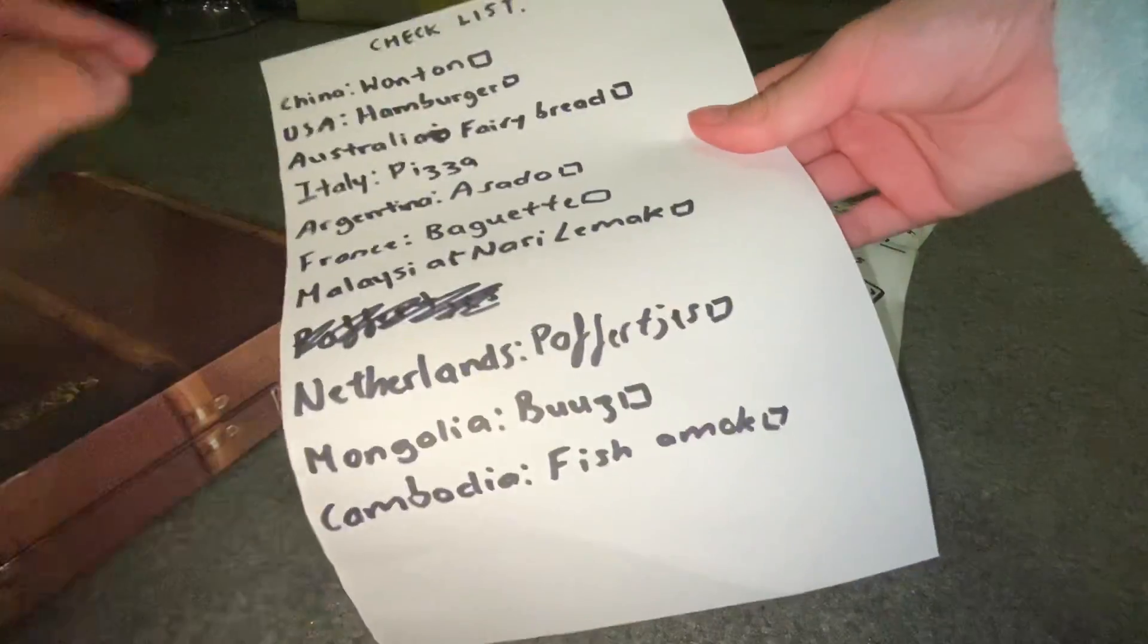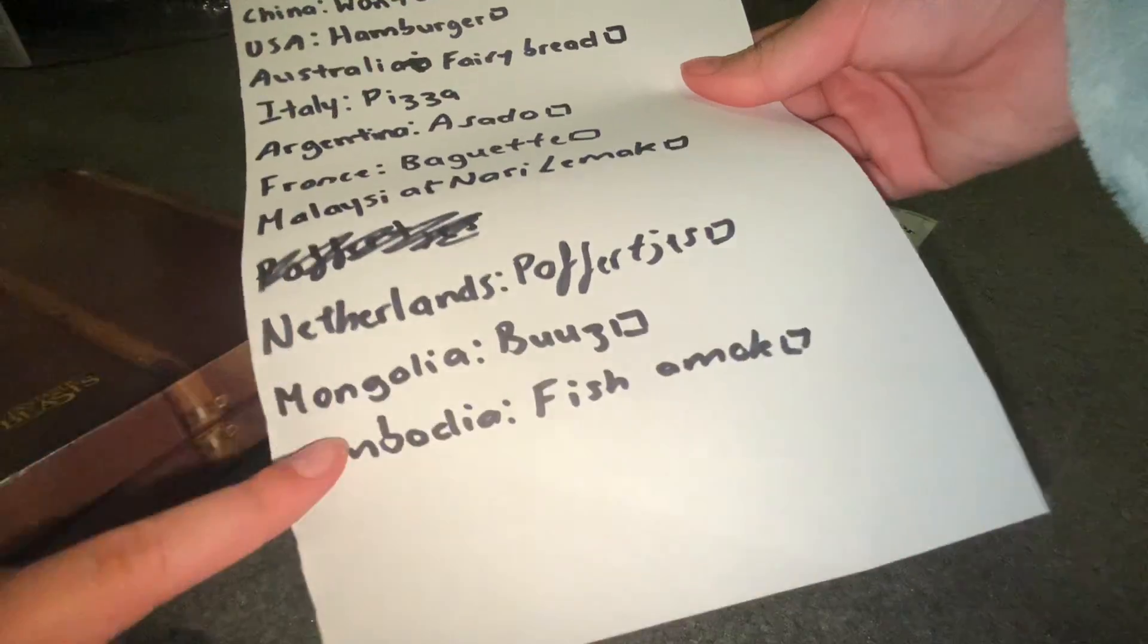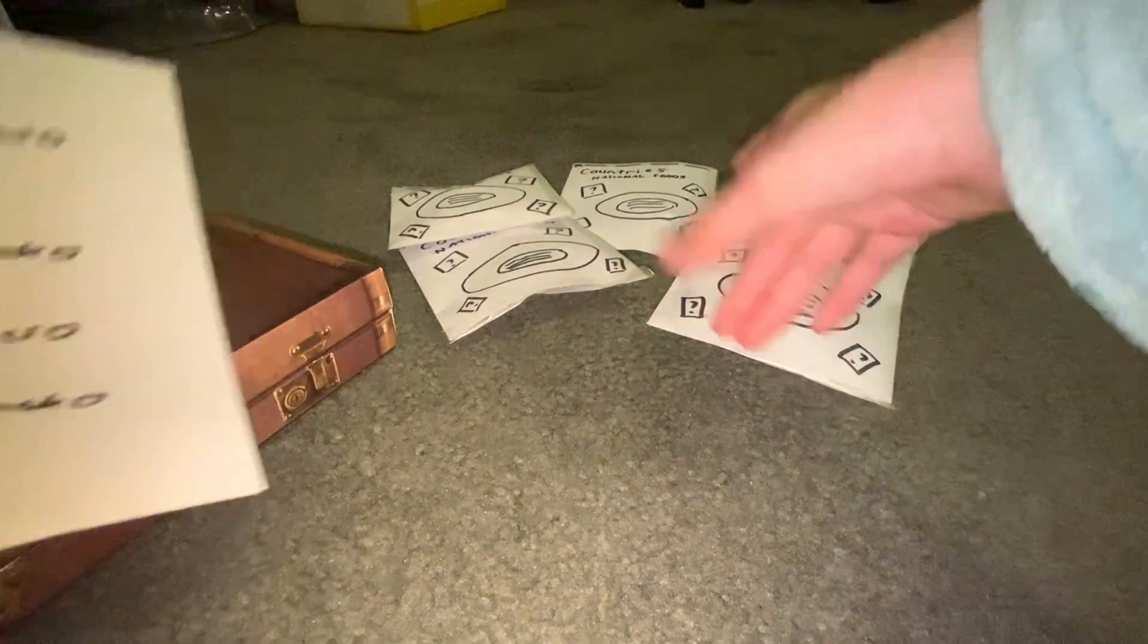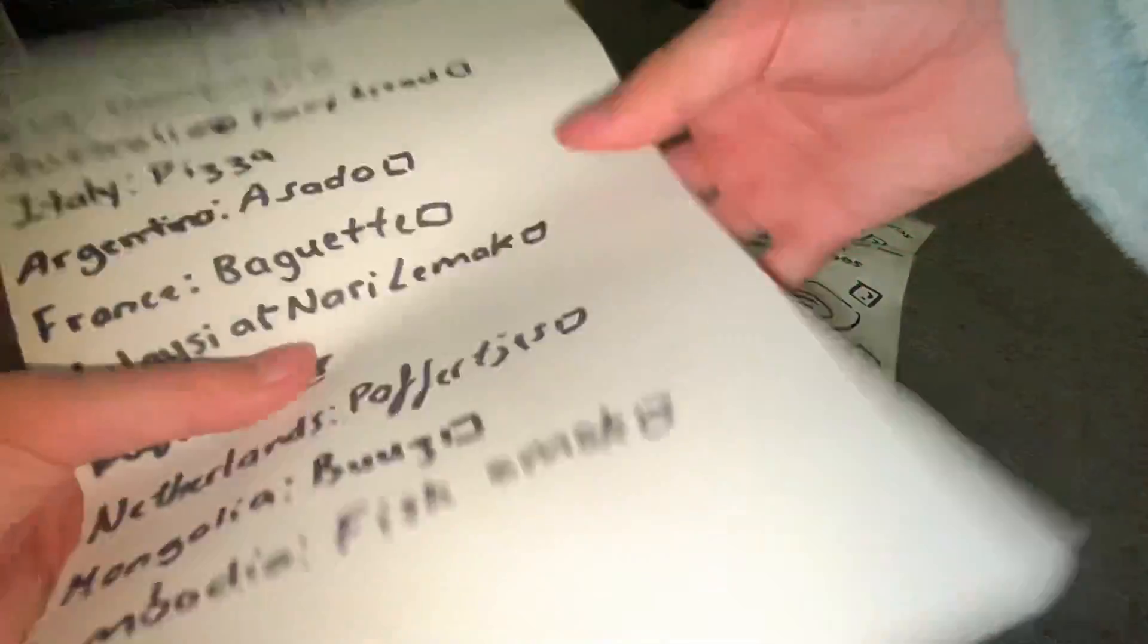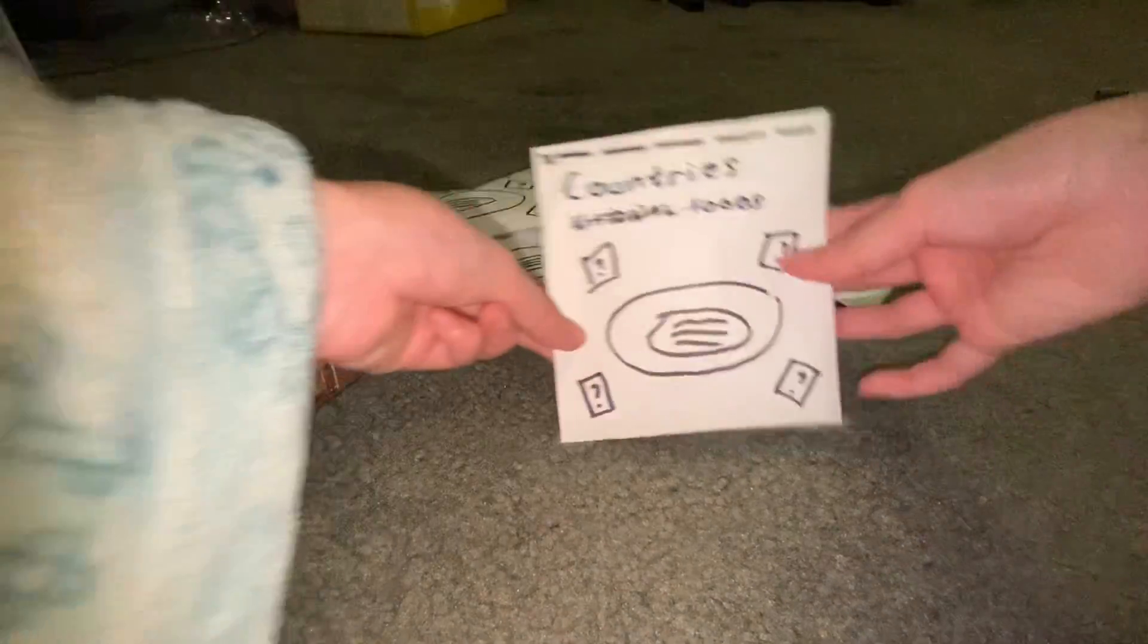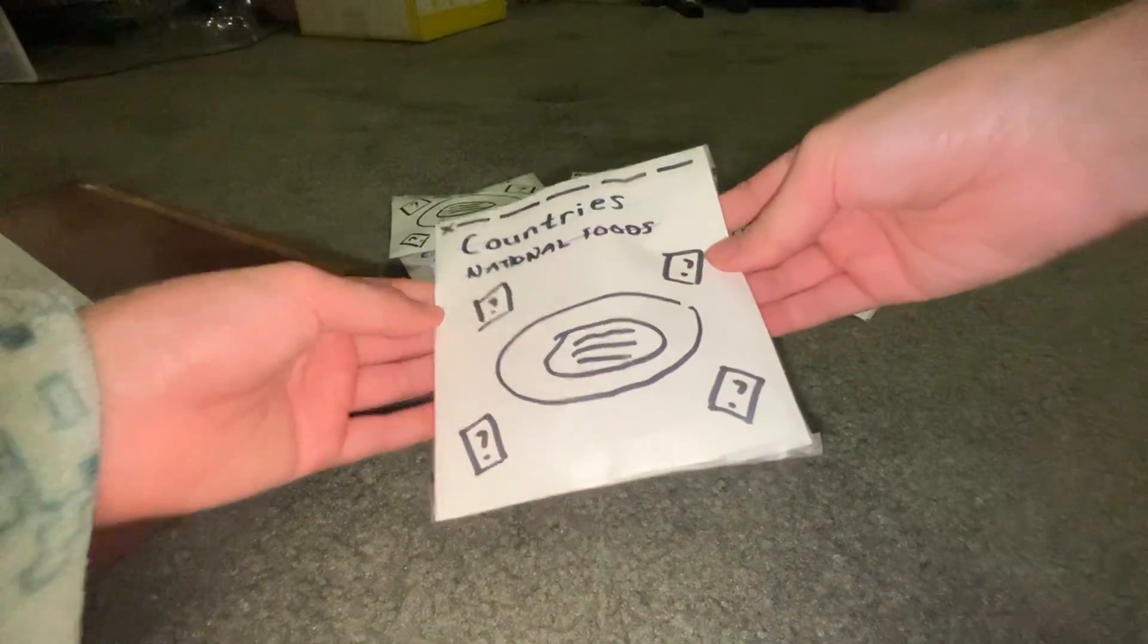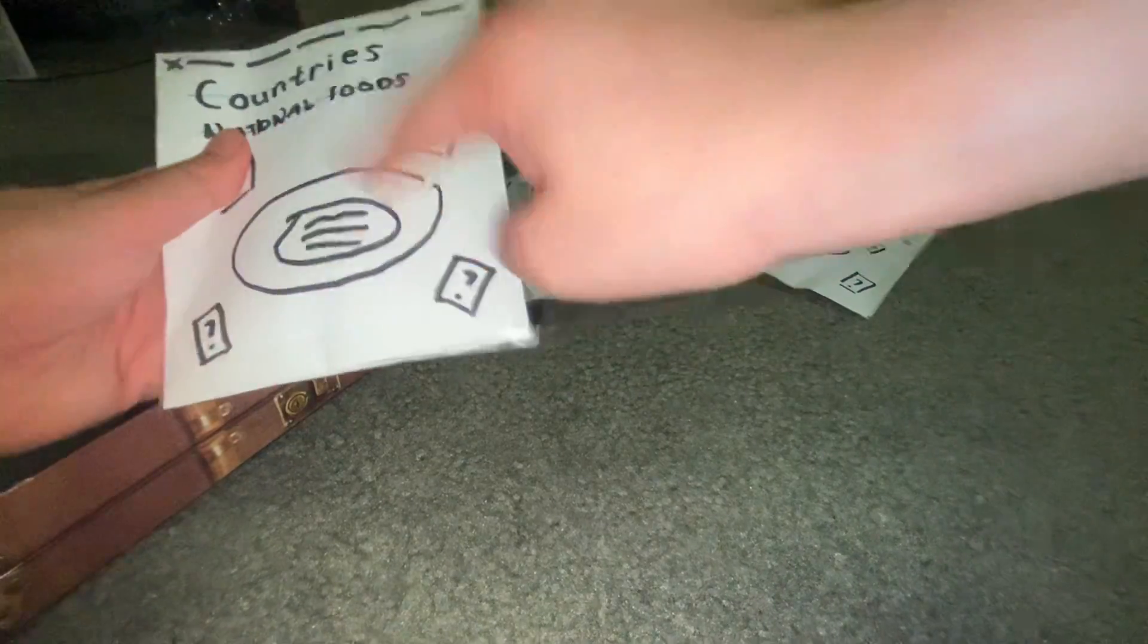There are 10 to collect, but there's only five here, so I wonder which ones we'll get. Let's get started opening. Let's open up this one first. Let's have a feel, and they are paper squishies, yes, countries' national foods. This is spaghetti right here.